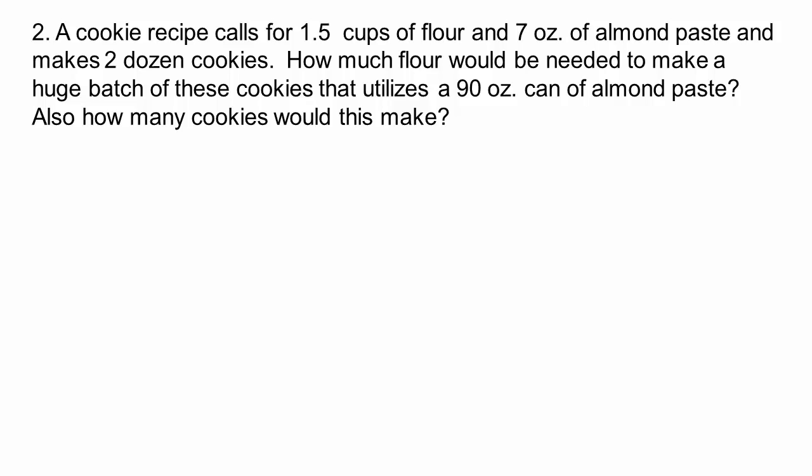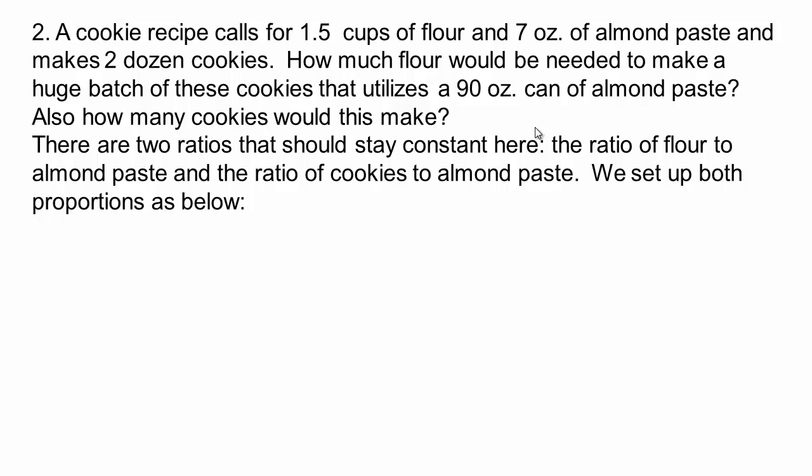Take a look. A cookie recipe calls for one and a half cups of flour, seven ounces of almond paste, and makes two dozen cookies. How much flour would be needed to make a huge batch of these cookies that utilizes a 90 ounce can of almond paste? Also, how many cookies would this make? So let's see how we can figure this out. There are two ratios here.